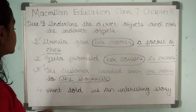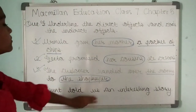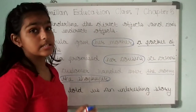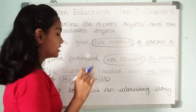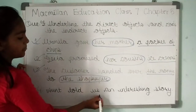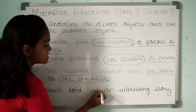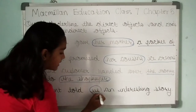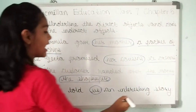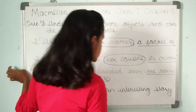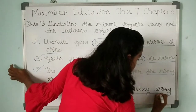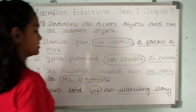Question four: 'And told us an interesting story.' Here also, you might get confused, but 'us' is the indirect object and 'an interesting story' is the direct object.